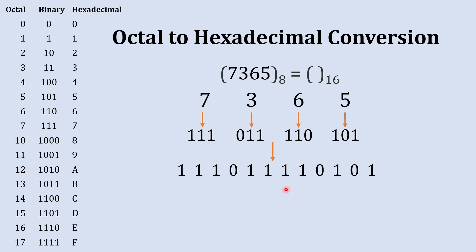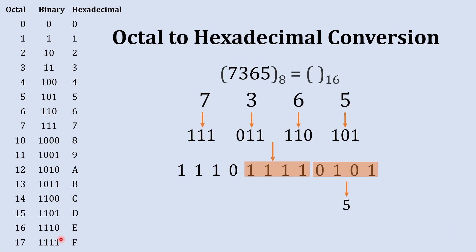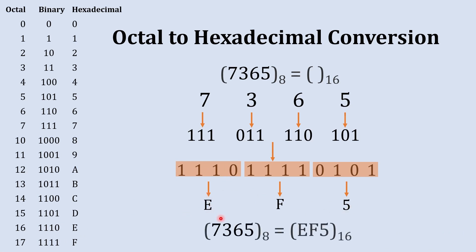We will start creating groups of four binary digits and then convert each group back to hexadecimal, starting from the right. The first group of four digits is 0101 — that equals five. The next group is 1111 — the hexadecimal equivalent is F. The final group is 1110 — that equals E.